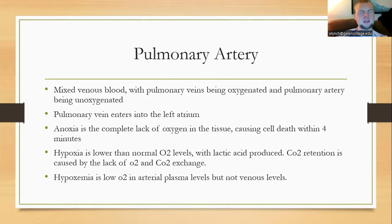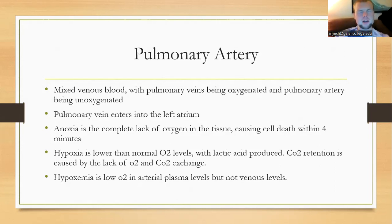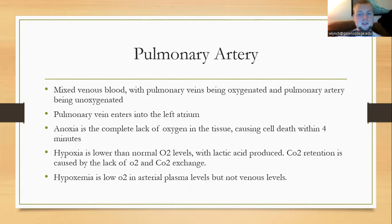Hypoxemia is going to be low oxygen specifically in the arteries, meaning low oxygen in the arterial plasma but not on the venous side. The oxygen levels in the venous side are typically around 40 mmHg. Hypoxemia means less arterial oxygen, which means less oxygen that can be exchanged with the tissues.